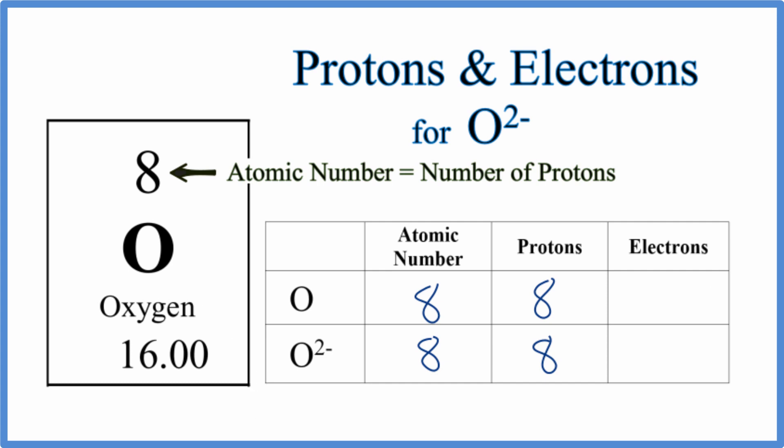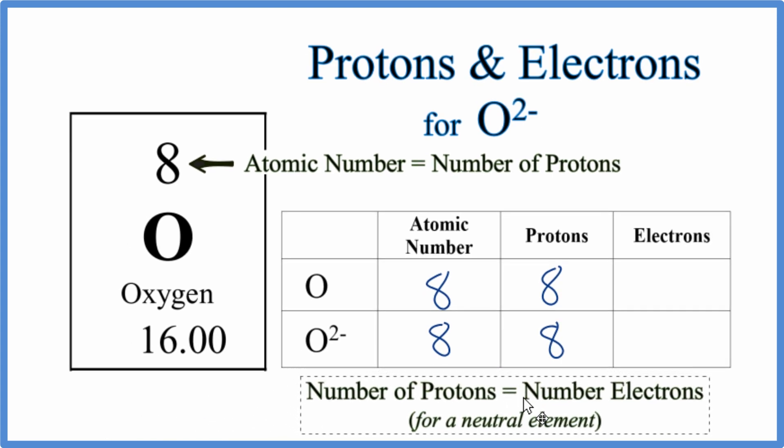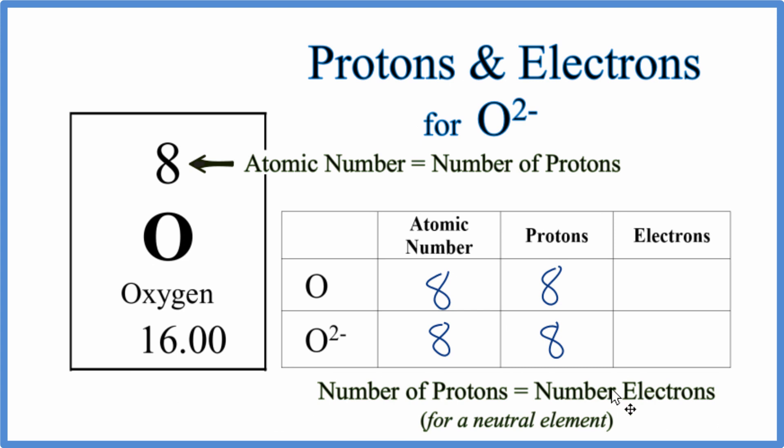For oxygen, neutral oxygen on the periodic table, the number of protons is going to equal the number of electrons. So we have 8 protons, we'll have 8 electrons. That makes sense. 8 positive charges, 8 negative charges, we get a net charge of 0.